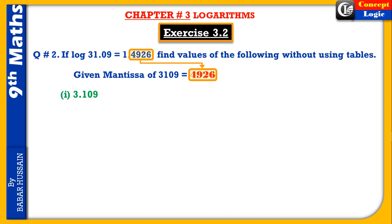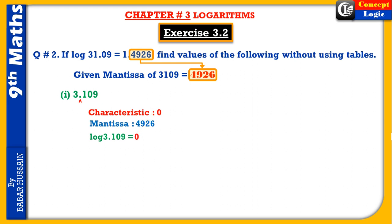First part: log(3.109) find کرو۔ Left side سے first non-zero digit کے بعد point of reference ہے — وہاں پر point ہے، اس کا مطلب characteristic zero ہو گیا۔ Mantissa ہمیں given ہے: four nine two six۔ Log لکھیں گے: پہلے characteristic لکھیں، پھر decimal، پھر mantissa لکھ دیں۔